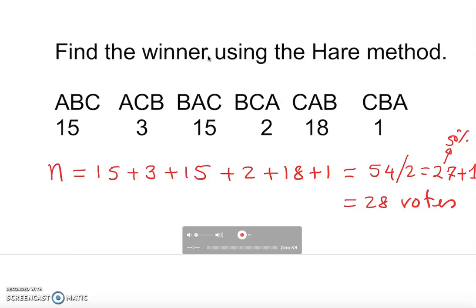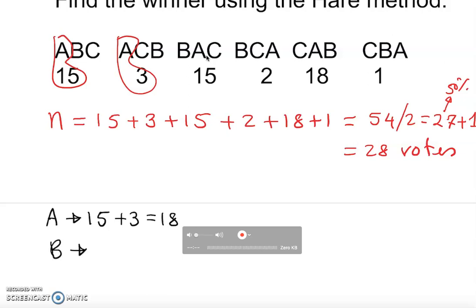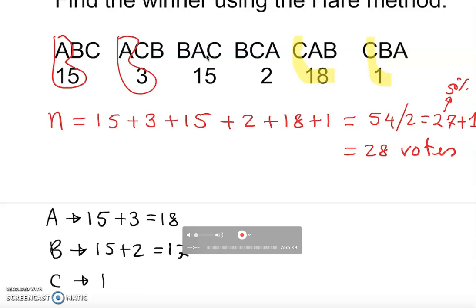So let's check if anyone actually got more than 50 percent. Looking at the first-choice votes: Adam got 15 plus 3 which is 18. Buckery got 15 plus 2 which is 17. Cynthia got 18 plus 1 which is 19. No one got 28 votes, so no one wins by majority rule.